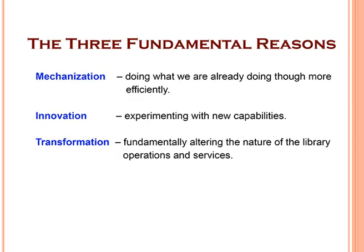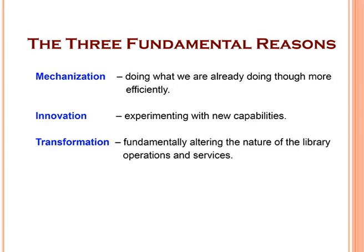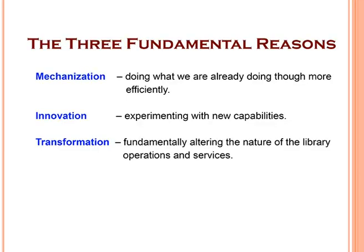With automation, the fundamental benefits we get are: first, mechanization — doing what we already do more efficiently through computers; second, innovation — experimenting with new capabilities, such as linking your OPAC with Web 2.0 tools and linking your cataloging module with linked open datasets; and third, transformation — fundamentally changing the nature of library services. These three — mechanization, innovation, and transformation — are the most important reasons for library automation.